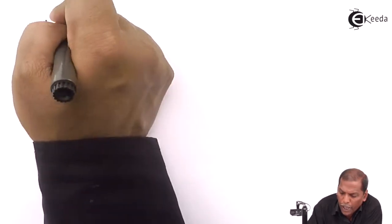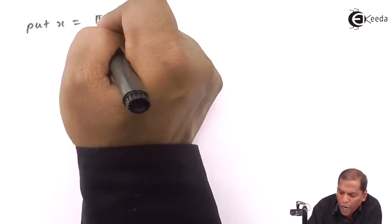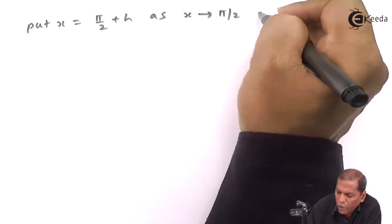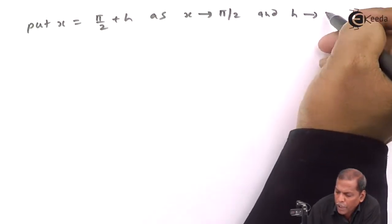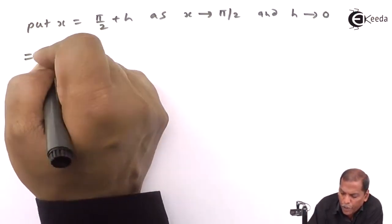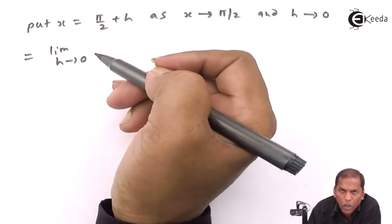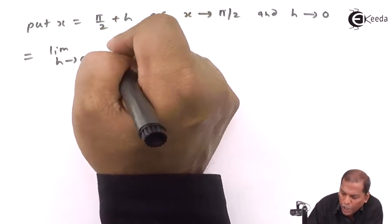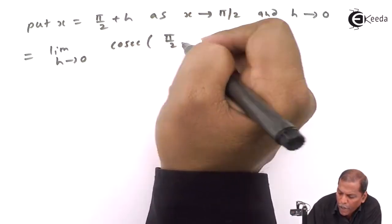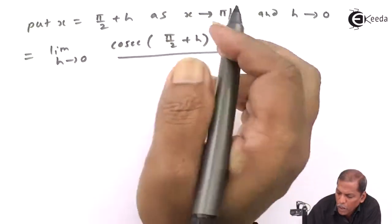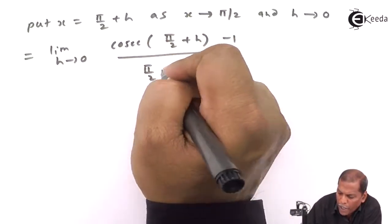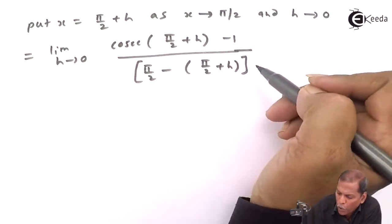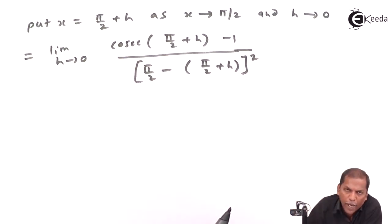Since we get the 0/0 form, we have to solve this problem using the method of substitution. For that purpose, we put x = π/2 + h, so as x tends to π/2, h tends to 0. The next step: limit h tends to 0 of cosec(π/2 + h) - 1 upon π/2 - (π/2 + h), whole square in the denominator.